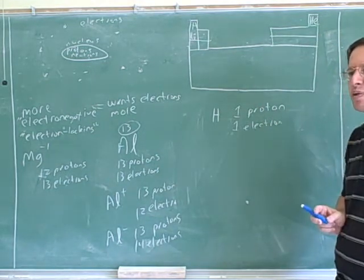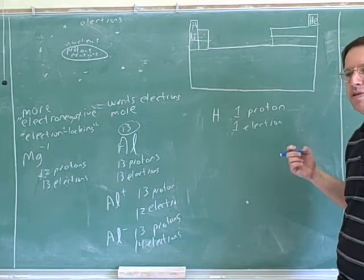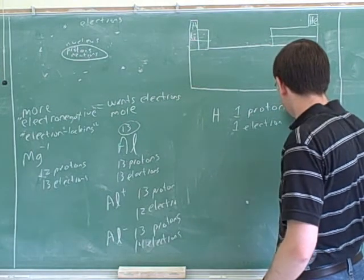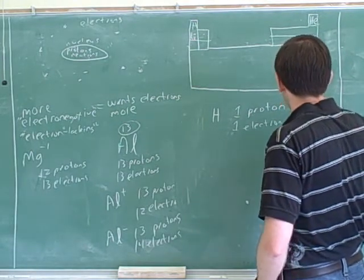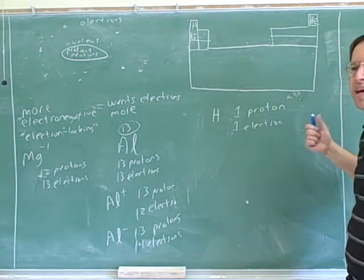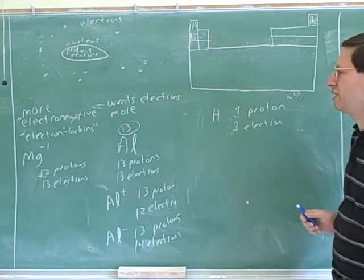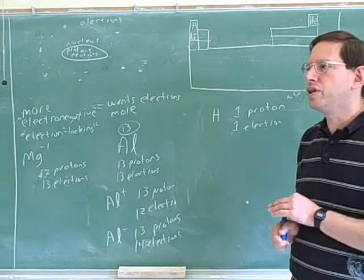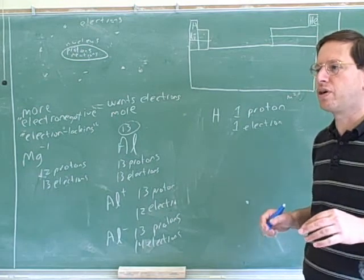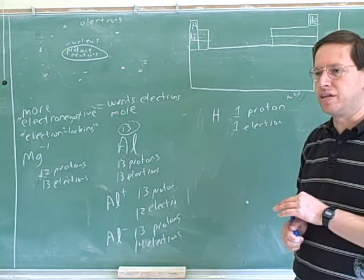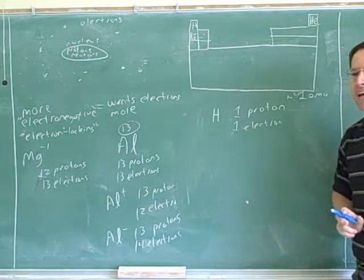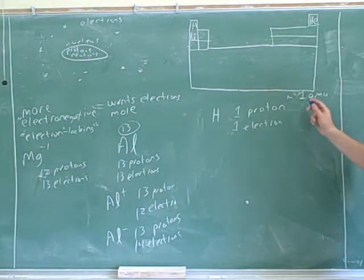What is the mass of a proton? You could look up the mass of a proton in a book, and you would get something like 10 to the negative 27 kilograms. That's such a small number that it's not very convenient to work with. So instead, we usually use different units — what are called AMUs, or atomic mass units. We define the proton as having a mass of approximately one atomic mass unit, which is much more convenient to work with.